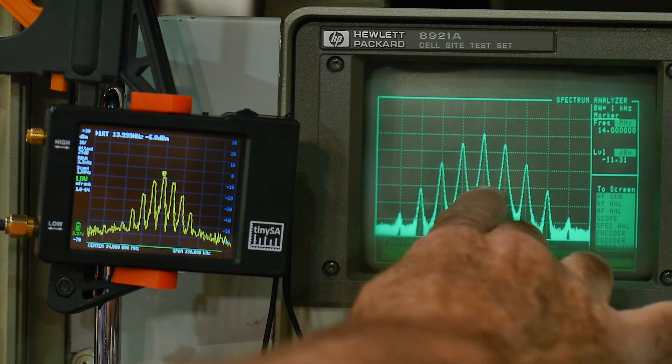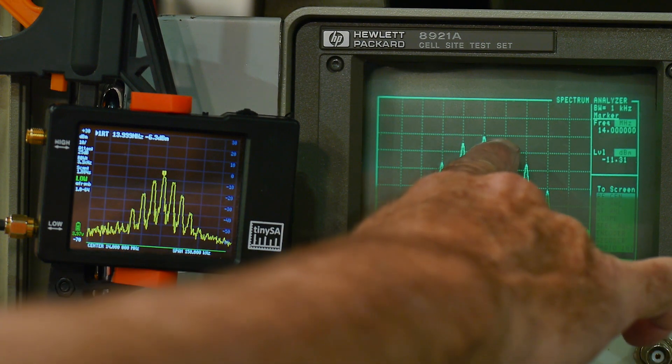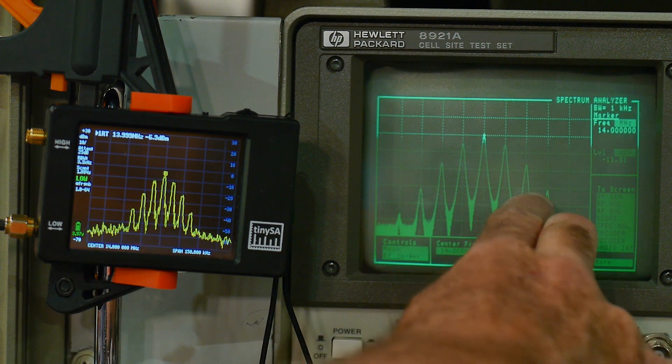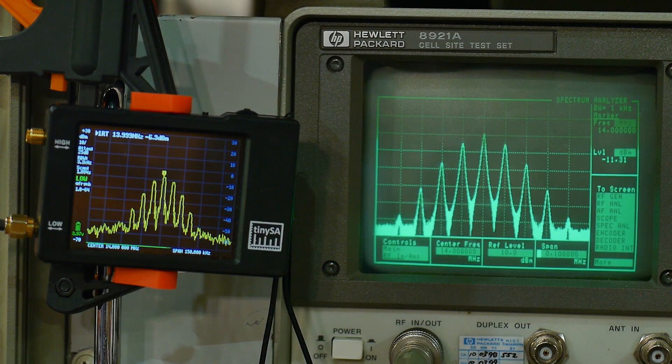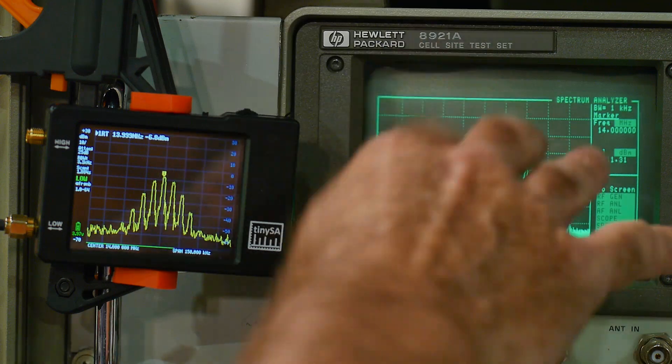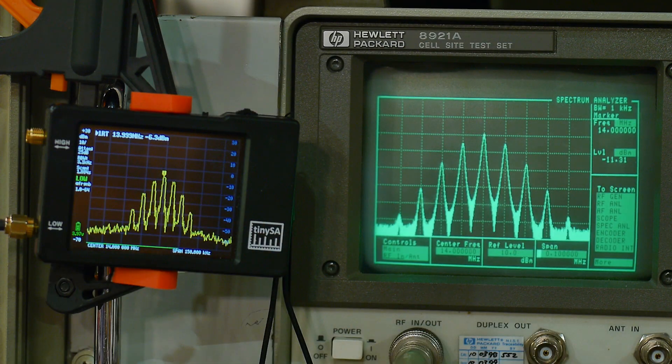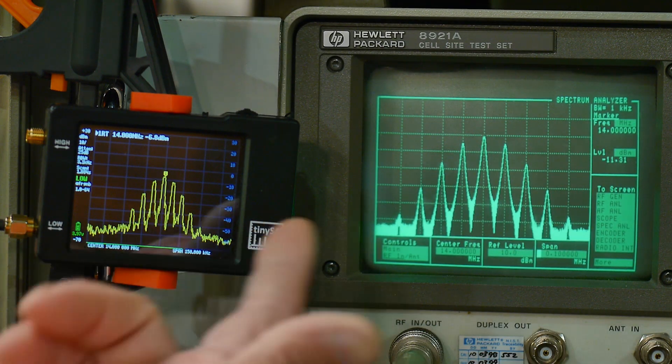So you can see we have the first lobe at 10 kilohertz, then one at 20 kilohertz, one at 30 kilohertz, one at 40 kilohertz, and they fall off depending on your deviation and things like that. So I'm not going to get into that. I just want to see if we can actually see that signal on the TinySA. And we can.